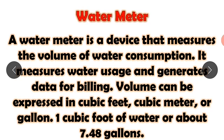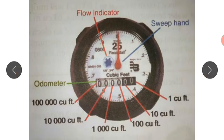A water meter is a device that measures the volume of water consumption. It measures water usage and generates data for billing. Volume can be expressed in cubic feet, cubic meters, or gallons. One cubic foot of water is about 7.48 gallons.